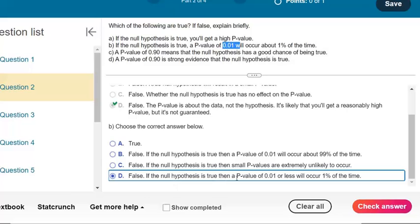That looks like D. If the null hypothesis is true, then a p-value of 0.01 or less, like 0.005 or 0.002, I think I said the wrong one the first time, anything less than 0.01 will occur 1% of the time.